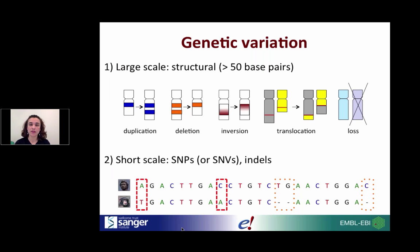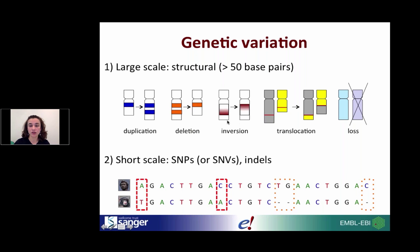In Ensembl, when we deal with variation, we typically have two main types. On one hand, we've got large-scale variation, also known as structural variants — things larger than 50 base pairs. For example, when comparing two genomes or chromosomes, you can see loci that are duplicated, deleted, inverted, translocated from one chromosome to another, or even the entire loss of a given chromosome. Those are all different examples of large-scale genetic variation.